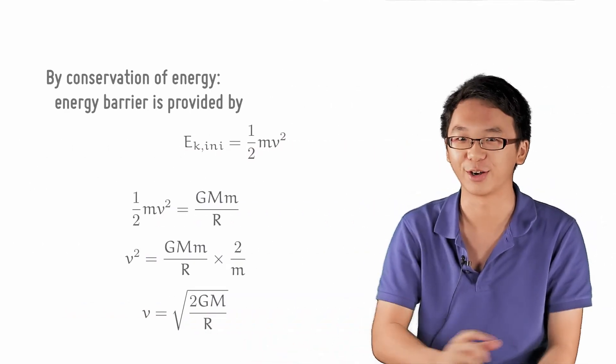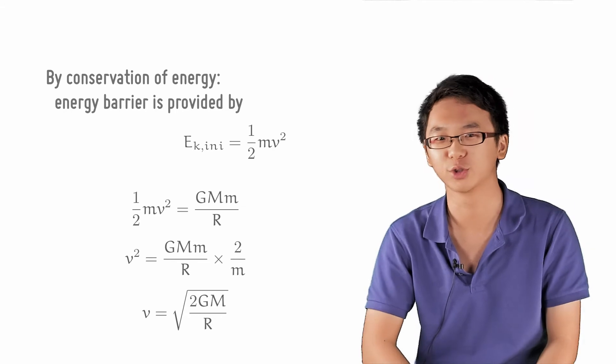Thus, by rearranging the variables, we get v equals the square root of 2GM over r.